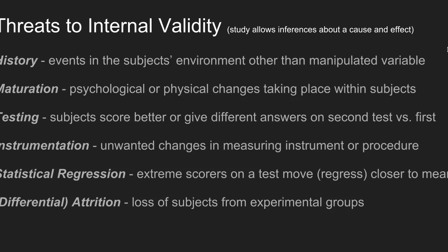History refers to extraneous events that occur in the study participants' environments other than the manipulated treatment variable. When these extraneous events occur, they could affect measurements before and after the study and serve as an alternative explanation for any observed findings.